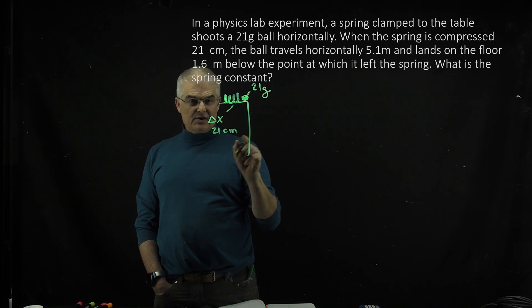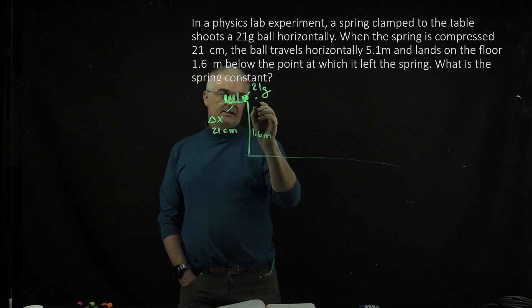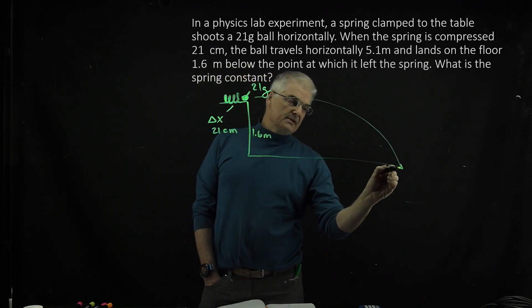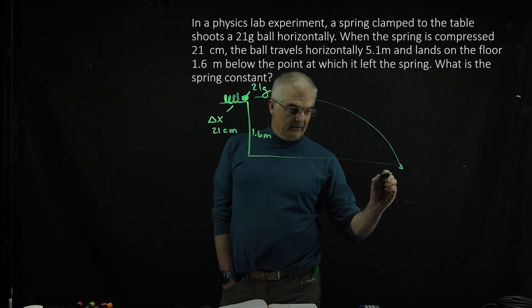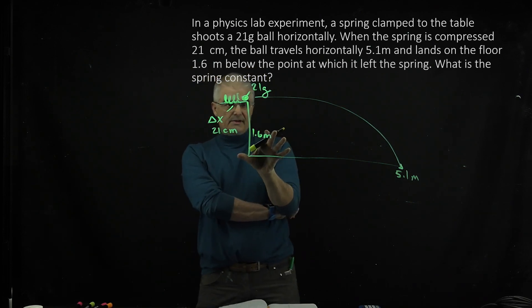It is a 1.6 meter height table, and as it launches, it lands a distance of 5.1 meters. You may have slightly different numbers, but this is how we set this up.